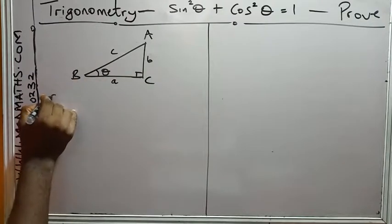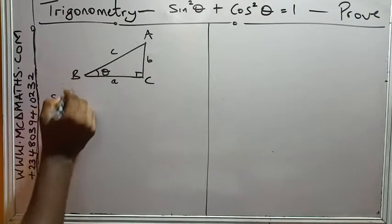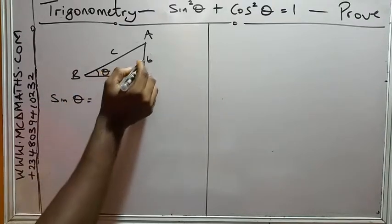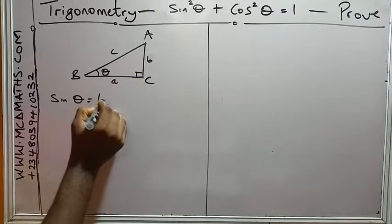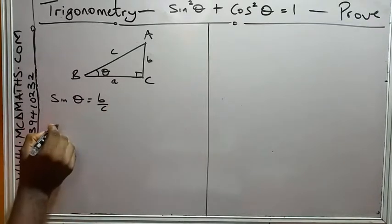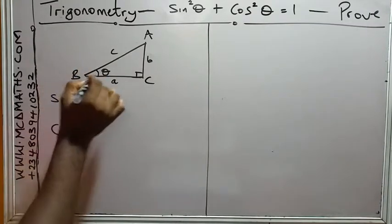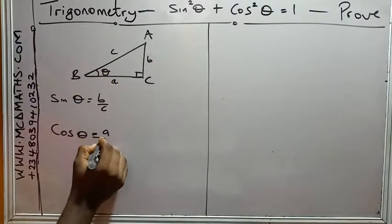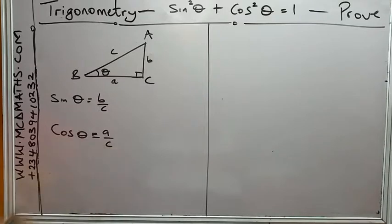Now, if I say sine of sine theta or sine b, sine theta here, which is sine b, will give me opposite, which is b, over hypotenuse, which is c. Then, cos theta, which is cos b, will give you adjacent, which is a, over hypotenuse, which is c. Now, having known this, the first step.